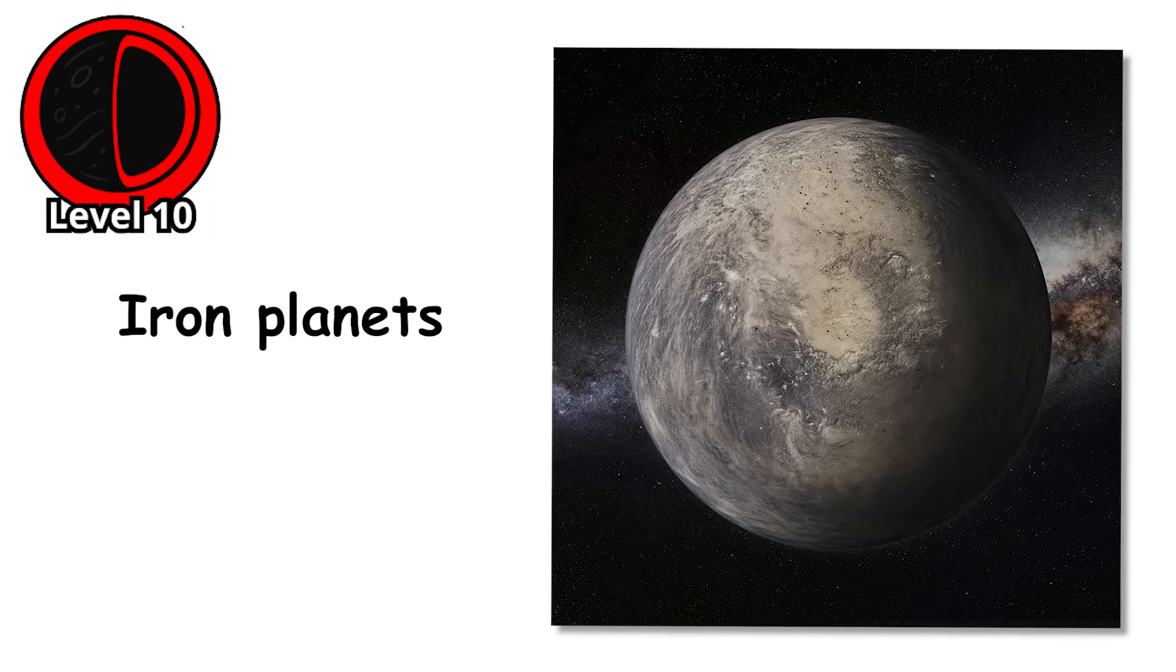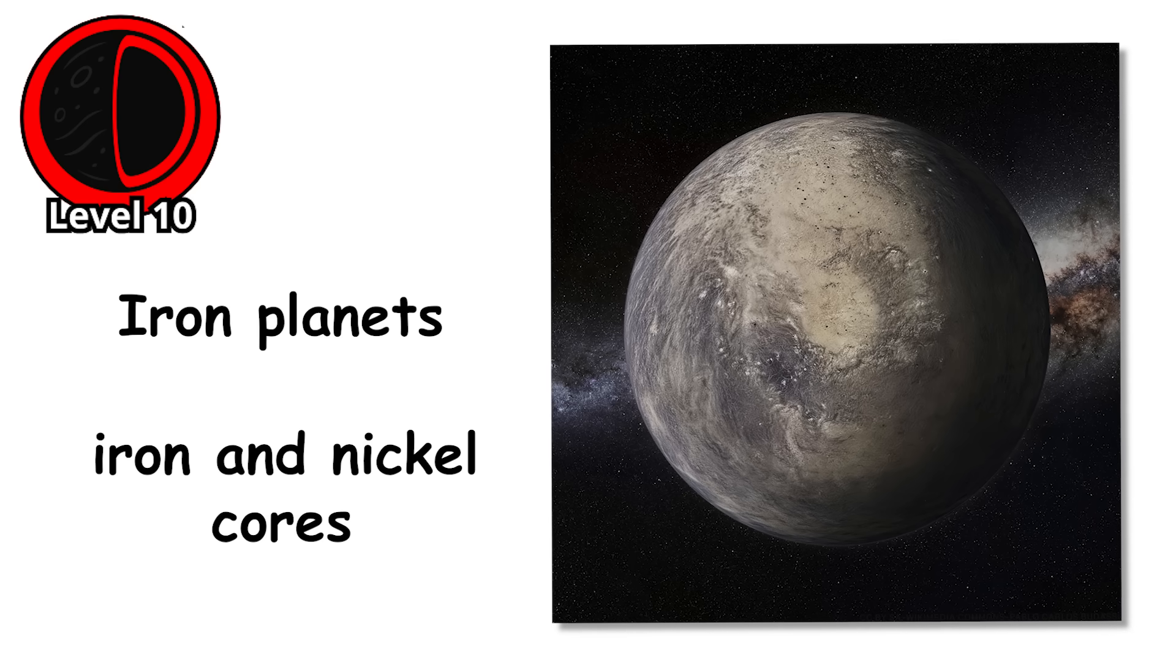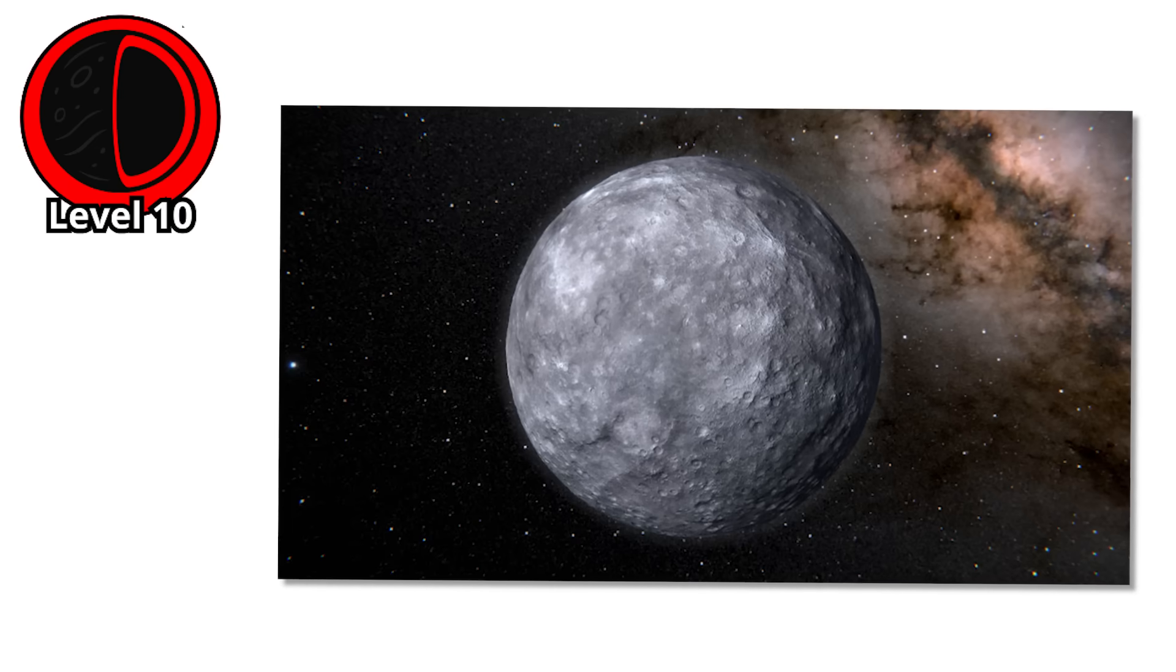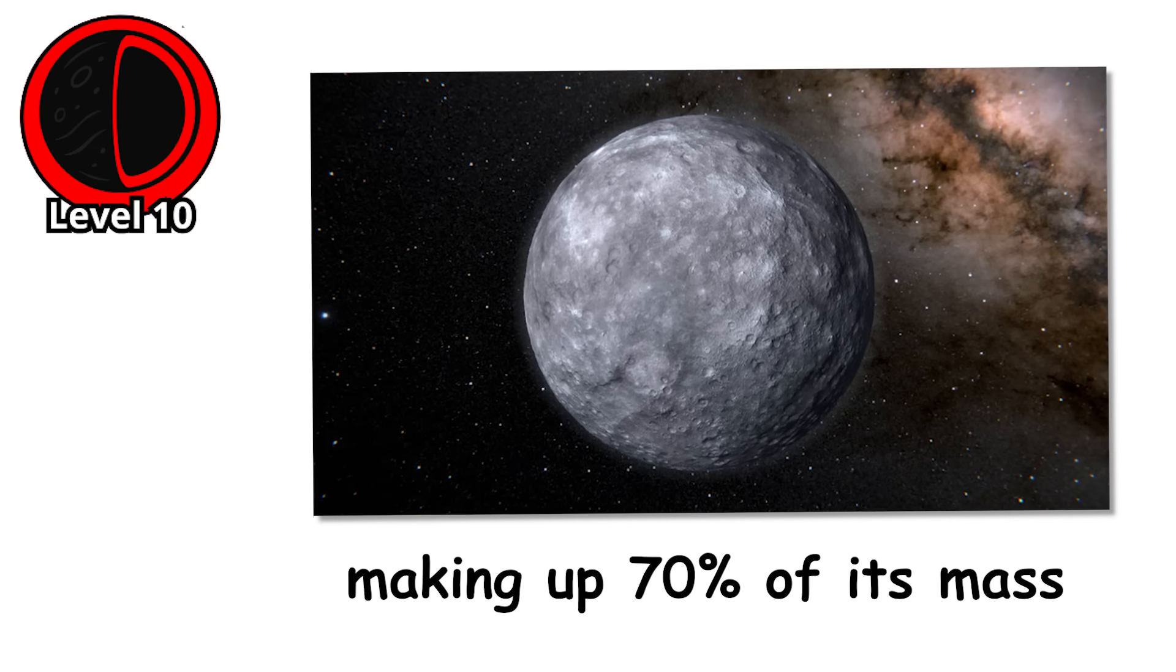Iron planets - planets that are almost entirely metal, iron and nickel cores exposed to space with little to no rocky mantle. Mercury is partially like this with an unusually large iron core making up 70% of its mass. And then there's the most extreme - a planet orbiting a black hole.